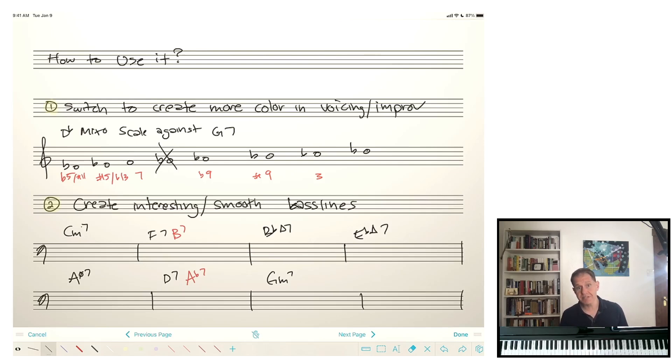But there's also going to be times when you want to use the tritone substitution, when you decide, I want to swap out one chord for another. The number one reason that you might want to do that is as a way to create more color in your voicing or in your improvisation. So what I've written down here, this is the D flat mixolydian scale. And then in the red, I've said what chord tone each of these notes is against a G dominant 7th chord. So if you were reading just a G7 and you wanted to use the notes of the tritone substitution, the D flat mixolydian, then you would get the following notes.